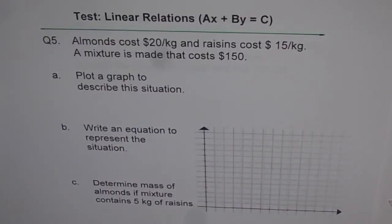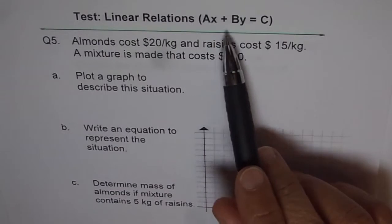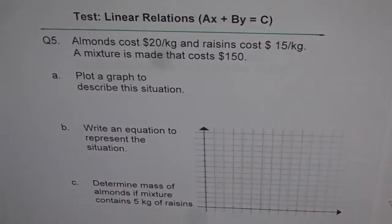In this series of videos, we are trying to understand linear relations and a special kind of linear relations which can be represented by the equation Ax plus By equals C. And we also see that in these linear relations, we really don't have any variable which is specifically independent and the other specifically dependent. So any one of those variables could be treated as dependent or independent.